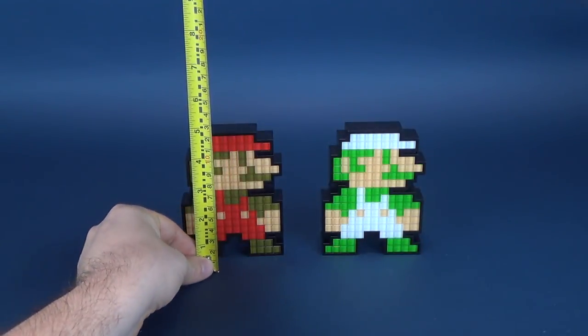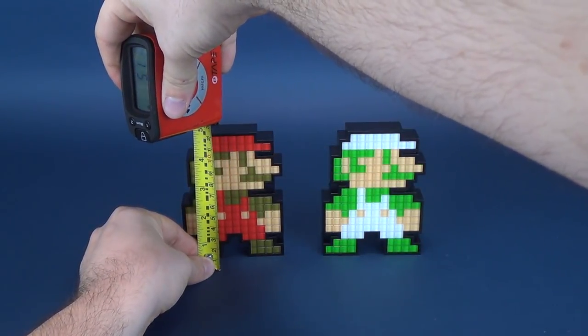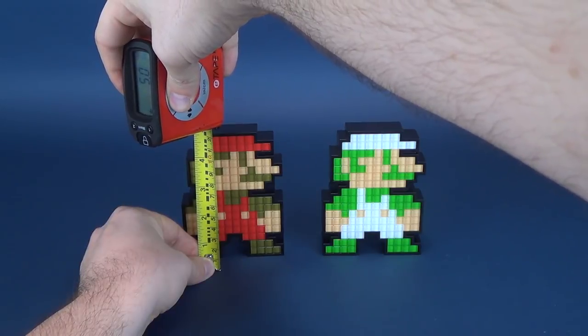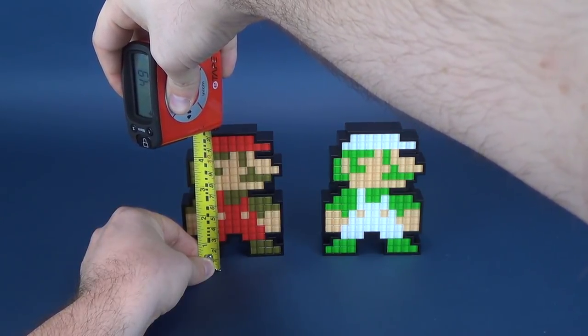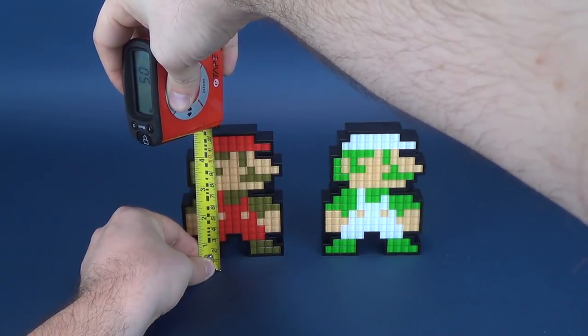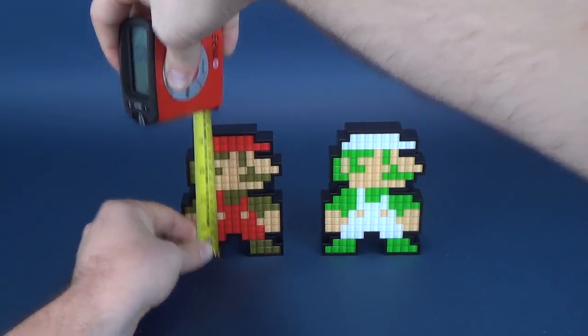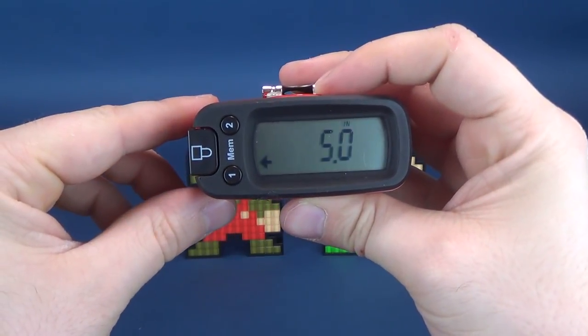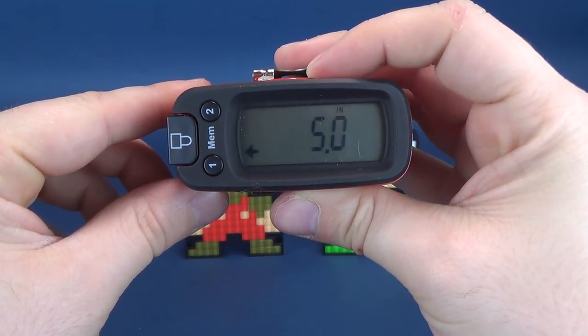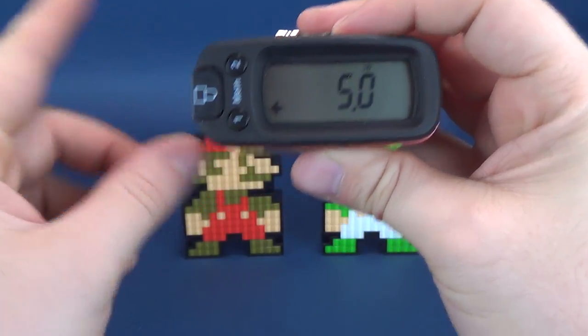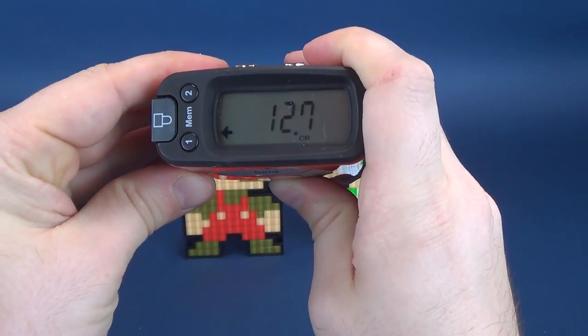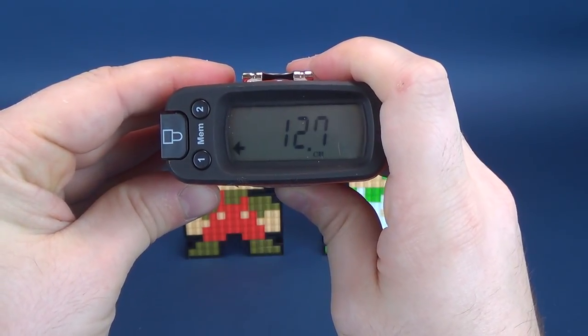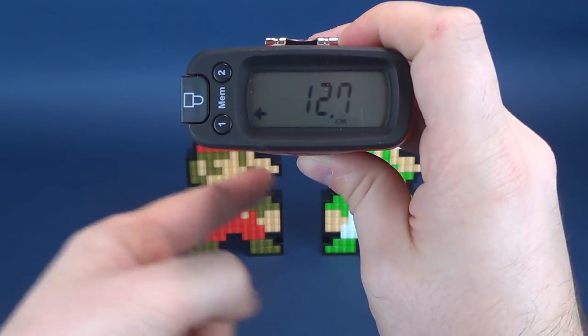Being that these are identical to one another, we're only going to measure Mario. Sorry Luigi, but the measurements for Mario will also hold true to his twin brother. Taking the UltrameasureTron and measuring to the very top of Mario, this pixel pal stands five inches tall, which also is for Luigi. Switching that to centimeters, you're looking at 12.7 centimeters for each one.